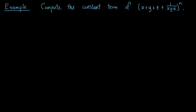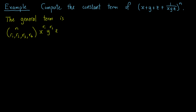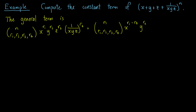Let's look at an example where we want to compute the constant term in the expansion of (x + y + z + 1/(xyz)) raised to the power N. The general term is the number of partitions of N into subsets of sizes R1, R2, R3, and R4, times x to the R1, y to the R2, z to the R3, times (1/(xyz)) to the R4. We can rewrite this as the number of partitions times x to the (R1 minus R4), times y to the (R2 minus R4), times z to the (R3 minus R4), where R1 plus R2 plus R3 plus R4 equals N.